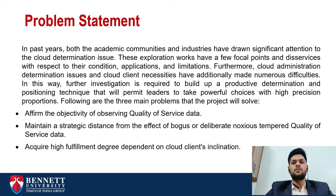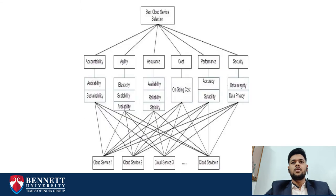Following are the three main problems that the project will solve. First, it will affirm the objectivity of observing quality of service data. Second, it will maintain a strategic distance from the effect of bogus or deliberately malicious tampered quality of service data to acquire high fulfillment degree dependent on the cloud client's inclination. Here is a diagram of the problem: the best cloud service selection, which is the top node, is based on accountability, agility, assurance, cost, performance, and security.